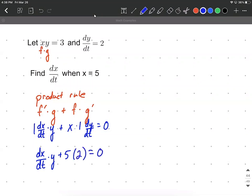As you notice on this, we still have one too many unknowns. We're looking for dx/dt, but we still don't know y either. So let's use the original equation, x times y equals 3, and we can fill in here, and that'll allow us to solve for y.